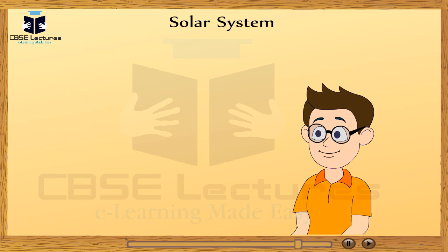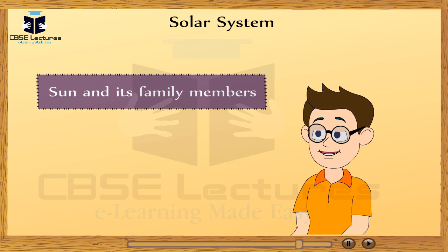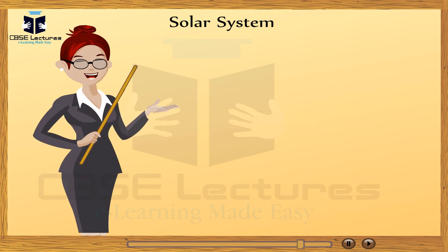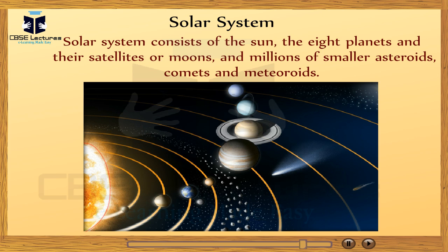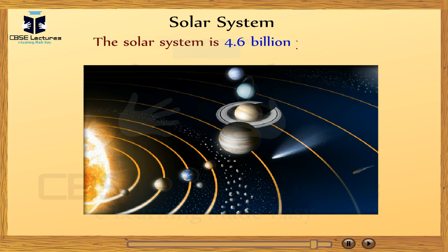What is a solar system? Solar system means the sun and its family members. The solar system consists of the sun, the eight planets and their satellites or moons, and millions of smaller asteroids, comets, and meteoroids. All other members of the solar system keep revolving around the sun. This is possible because of gravitational attraction between the sun and these bodies. The solar system is 4.6 billion years old.